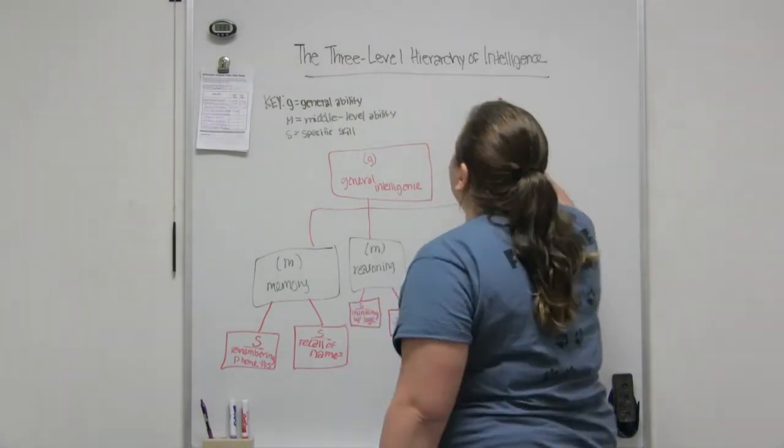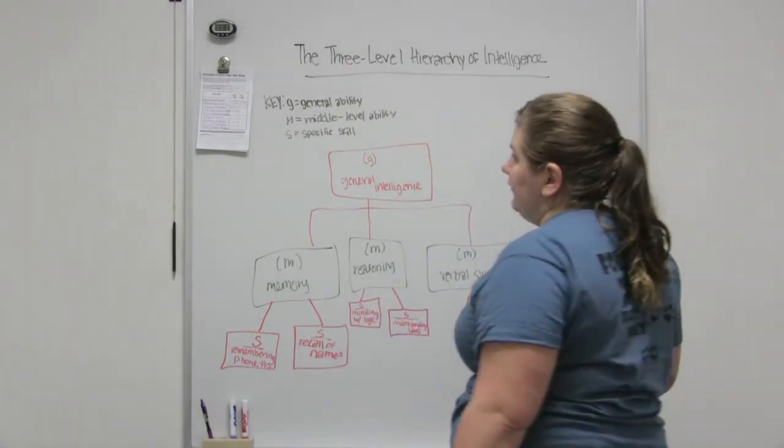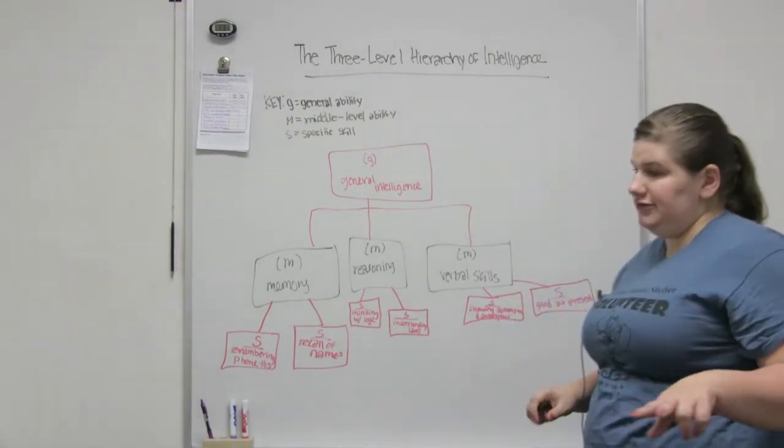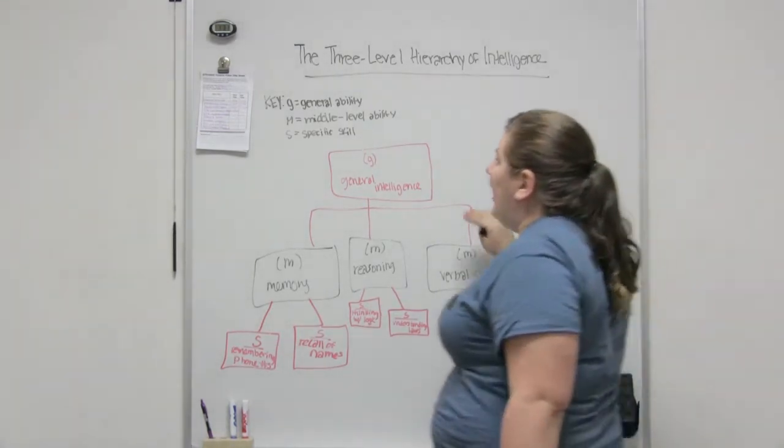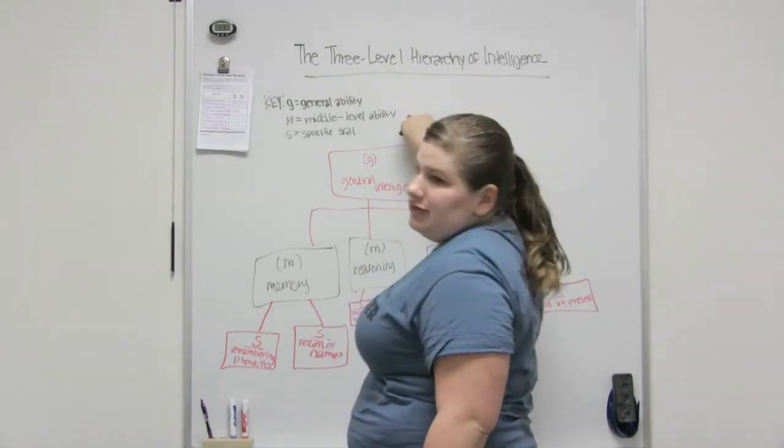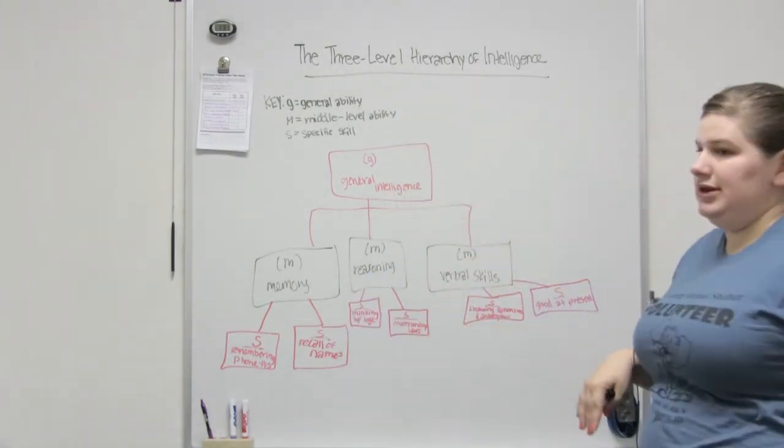This is called the three-level hierarchy of intelligence, which is based off of the two-factor theory of intelligence. So just think two, three, and that'll help you remember it. It adds another level besides the general ability and